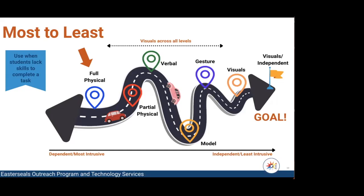On the right side we have "independent with visuals," but we also have visuals as the lowest or least intrusive prompt. The reason is because we all use visuals every day — we may not need them to complete a task, but that doesn't mean they're not there. Think about road signs. I walked into a Chick-fil-A a few months ago and in the bathroom they had a hand-washing task analysis above the sink for their staff. Not everyone needs that, but some people do. If they need that visual to complete it, it is a visual prompt. If it's just there and they don't need it, don't count that against them.